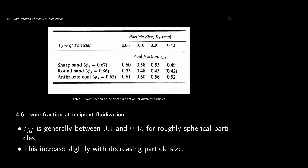For many particles, the epsilon_m value is known. For sharp sand with sphericity of 0.67, the void fraction varies between 0.49 and 0.6 depending on particle size. For many particles, the void fraction at minimum fluidization condition is known, so you can theoretically estimate the minimum fluidization velocity. Typically, for highly spherical particles, the void fraction is between 0.4 and 0.45, and it increases slightly with decreasing particle size.